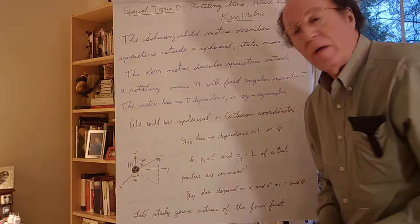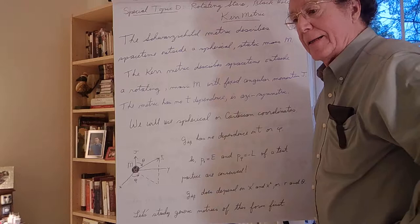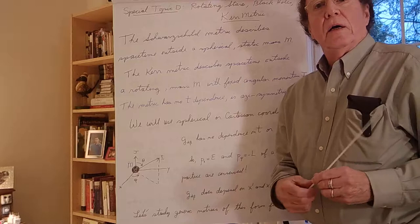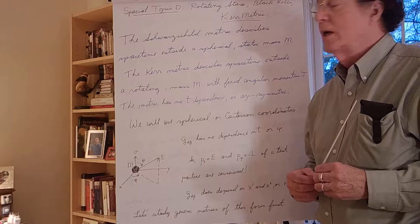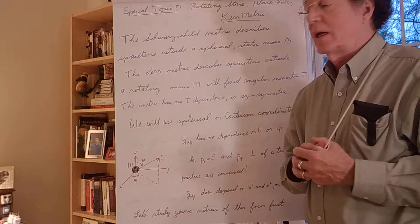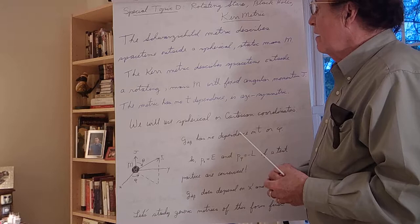After our preliminary discussion of rotating masses and gravitomagnetism, let's look at a more interesting and challenging subject: the case of rotating stars, black holes, and the Kerr metric. We've seen the Schwarzschild black hole, and now it's time to look at a more realistic situation where the black hole carries angular momentum. Since this is the situation that occurs in astrophysics, this study is very relevant to both the experimental and theoretical sides.